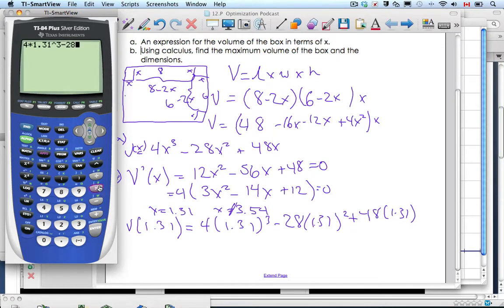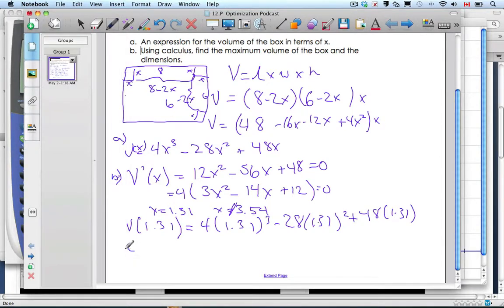So 4 times 1.31 to the power of 3 minus 28 times 1.31 to the power of 2 plus 48 times 1.31, equals.